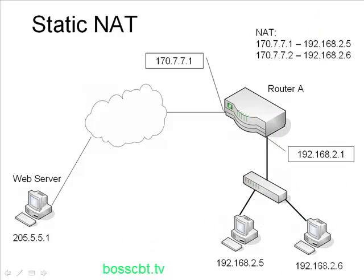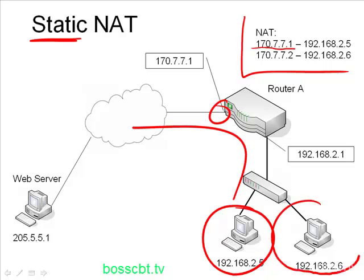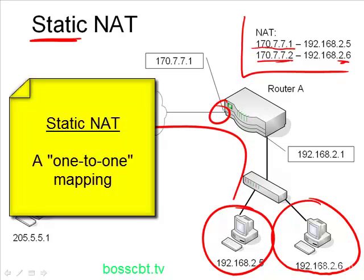The opposite of dynamic NAT is static NAT. The reason it's called static is that the IP address translations on the router are hard-coded — configured so that each time my PC contacts anything routed out this interface, it always gets the same IP address. For example, 192.168.x.2.6 is always going to get a specific public IP. It's not chosen from a pool; it's hard-coded on the router. That is static NAT.